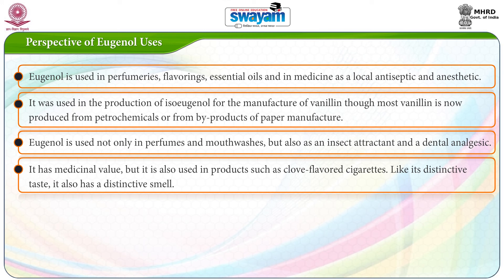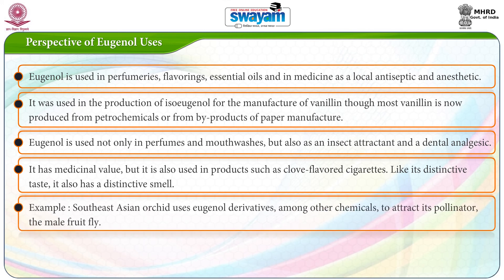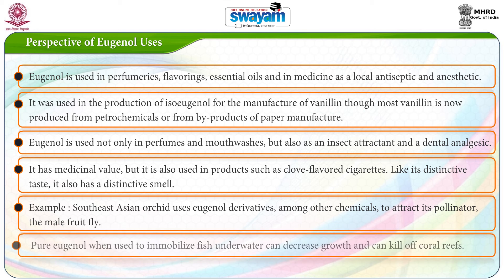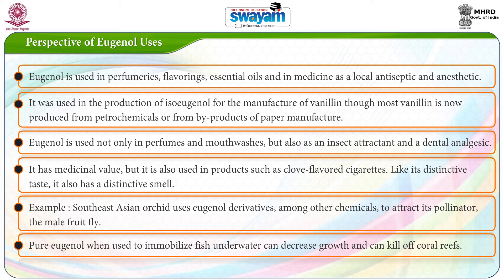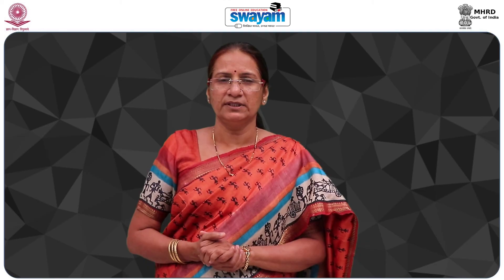Like its distinctive taste, eugenol also has a distinctive smell. For example, a South East Asian orchid uses eugenol derivatives among other chemicals to attract its pollinator, the male fruit fly. Pure eugenol, when used to immobilise fish under water, can decrease growth and can kill off coral reefs.